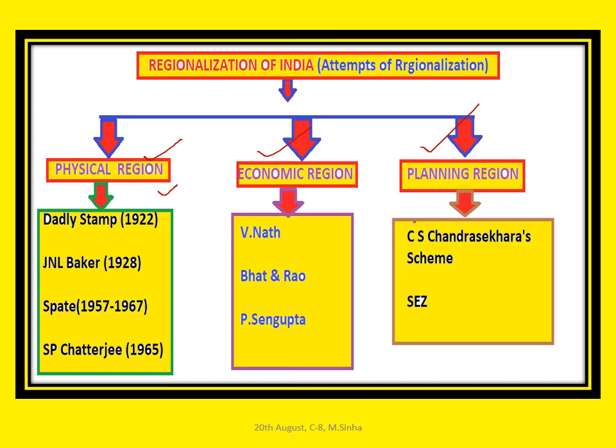S.P. Chatterjee's physiographic regionalization of India is very famous. In 1965, S.P. Chatterjee divided India into five physiographic regions: the Great Mountain Wall, the Great Plain, the Great Plateau and Peninsular India, the Coastal Plain (east and west), and the Islands. Those are the plans of regionalization on the basis of physical criteria.